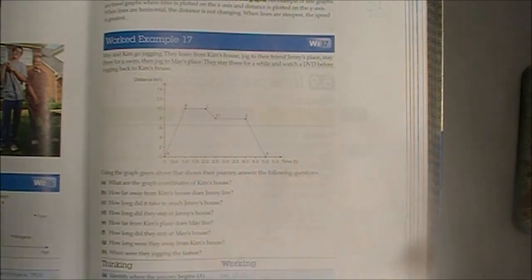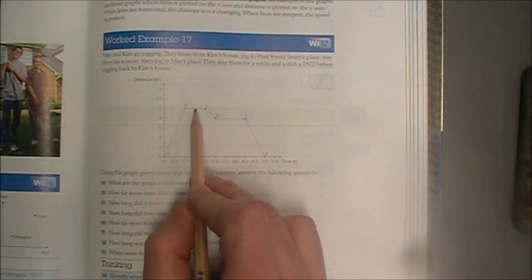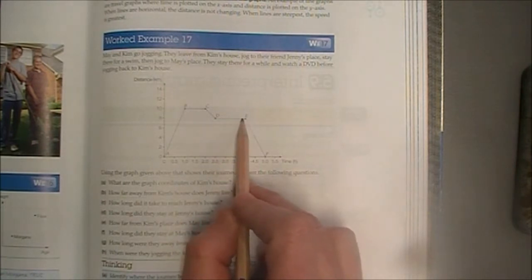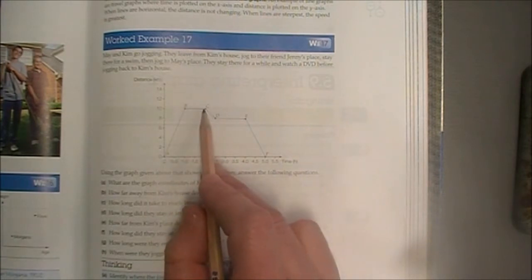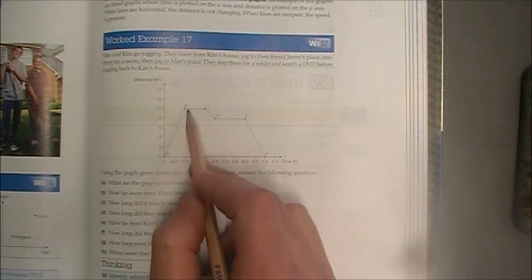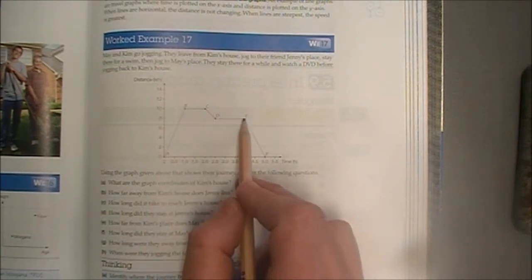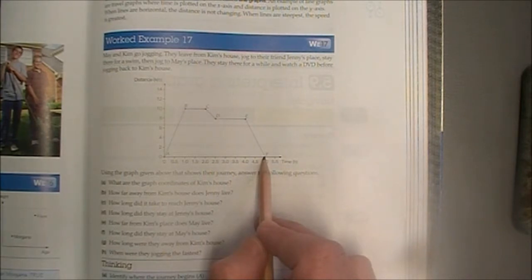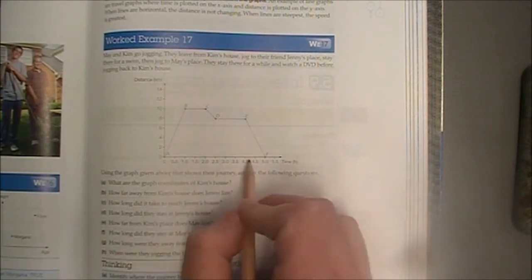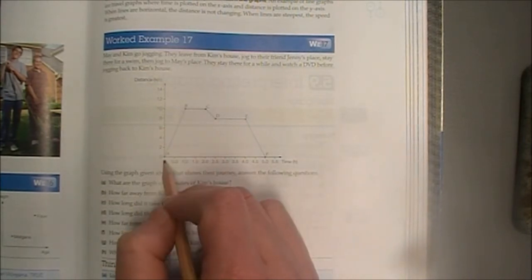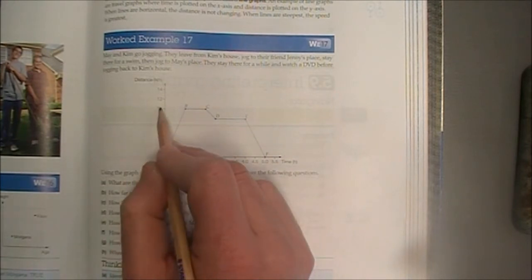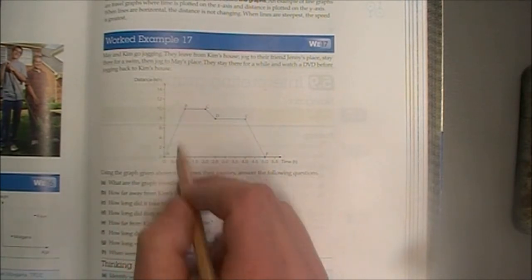When were they jogging the fastest? To work this out, we want to know which line is the steepest. You can see in this line here they were going for a swim, and this one was where they did their DVD. They're not actually travelling any distance, because they're staying at the same house. This line's not particularly steep. But we can see that this one is a bit steeper than that one. And if we look at the numbers, we were at 8 kilometres away, and we travelled back to Kim's house. So we travelled 8 kilometres. That was in the space of 1 hour, from 4 hours to 5 hours. And this line here though, in the space of 1 hour, they travelled 10 kilometres. So that line's definitely steeper. They were jogging the fastest on their way to Jenny's house.